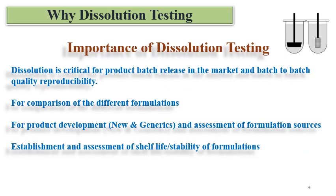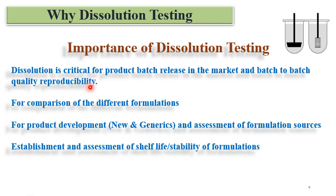Dissolution is critical for batch release in the market and for batch-to-batch quality reproducibility. When routine manufacturing begins, dissolution becomes very critical for releasing batches to market. It also ensures product quality and process reproducibility — if every batch passes the dissolution criteria, it means the process is robust and confirming to quality.